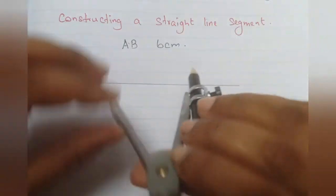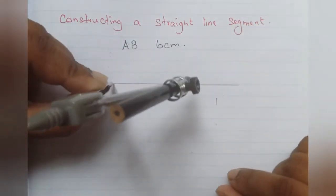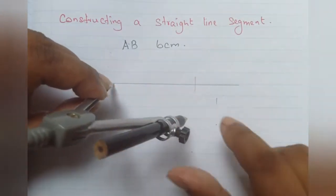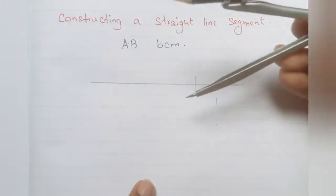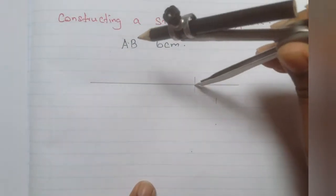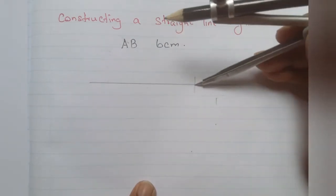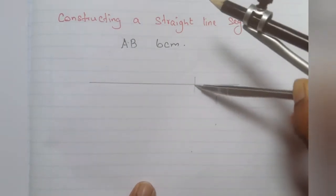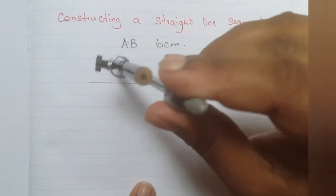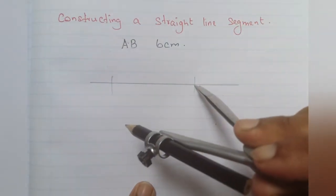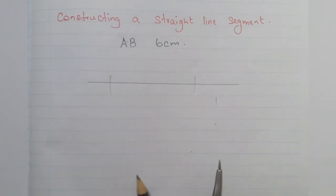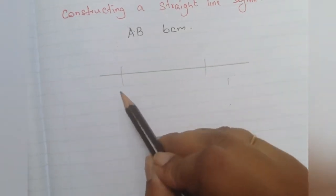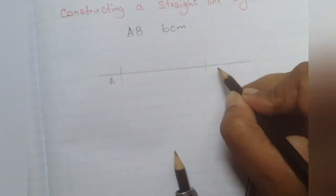Place the pointed part of the compass on any part of the straight line and draw an arc on the line. This marking is known as an arc. Then take the pointed part of the compass and place it on top of the intersecting point of the arc and the straight line. The distance between the two arc points will now be 6 centimeters in length.